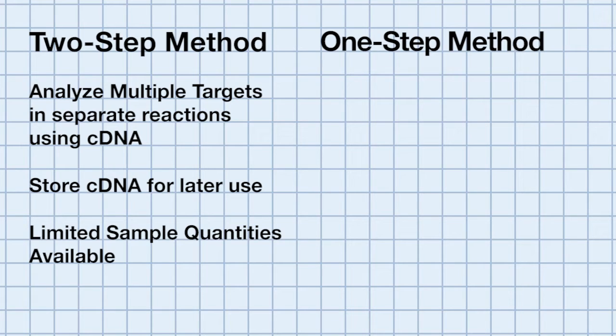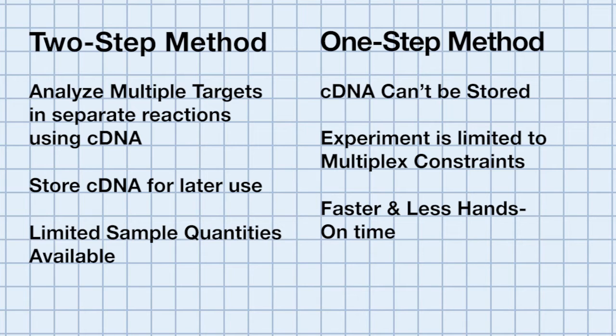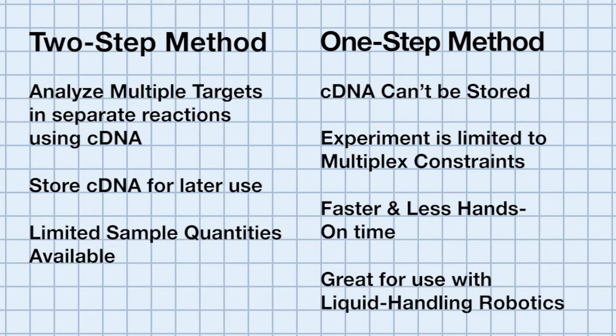Conversely, when using the one-step approach, the cDNA cannot be stored and the experiment is limited to multiplex constraints when looking at multiple targets, because everything occurs in that one reaction. However, this approach is faster and doesn't require as much hands-on time. The one-step method is great for use with liquid-handling robotics, which can reduce the chance of cross-contamination and pipetting errors. Useful for high-throughput gene expression analysis, the one-step method is also great for RNA virus detection, where specific detection can generally be accomplished in a single multiplex reaction and time to results is particularly important.